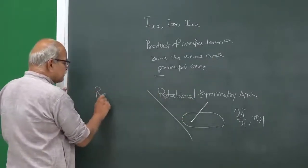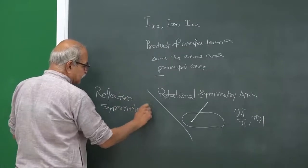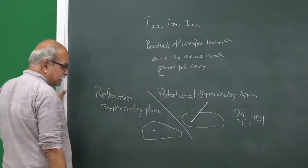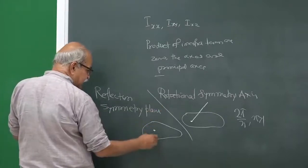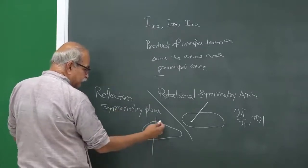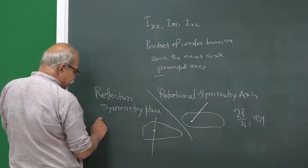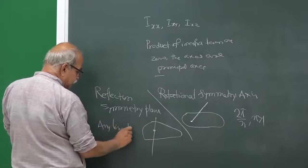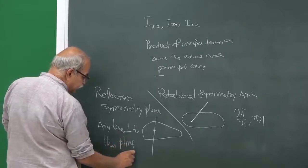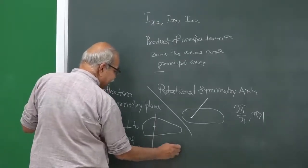The second method was a reflection symmetry plane. If you have a rigid body with a point as origin and you find a plane through this point which is a reflection symmetry plane — meaning if you reflect the whole rigid body in this plane, the mass distribution does not change — then any line perpendicular to this plane is a principal direction or principal axis.